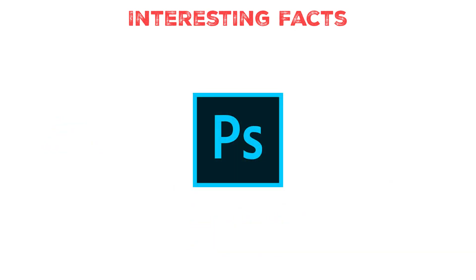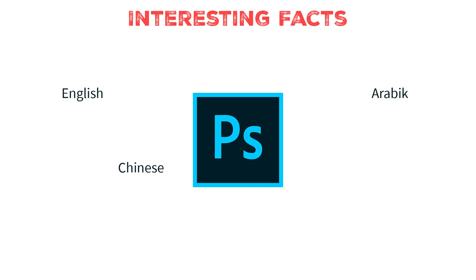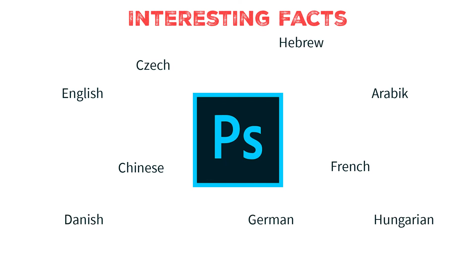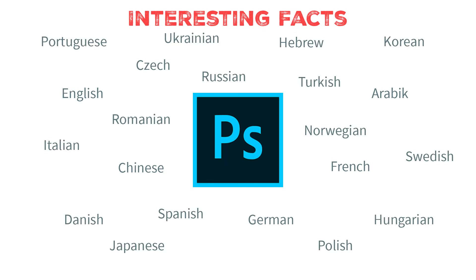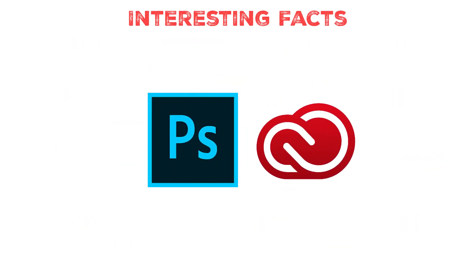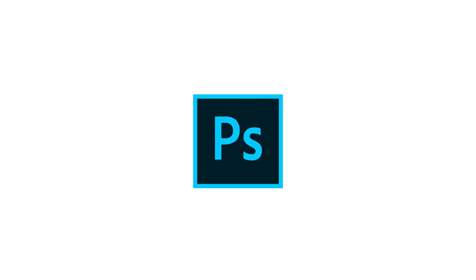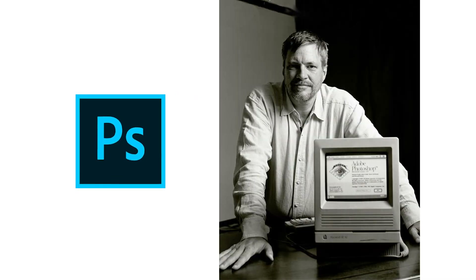Adobe Photoshop runs in 26 languages, including English, Arabic, Chinese, French, German, and many more. Photoshop's CC version includes various changes — with CC you are granted more liberty, speed, and the ability to make images incredibly real. Looking back into Photoshop, we will see how a simple idea can evolve into a useful and impacting tool. Without Knoll's Display program, we would not have our favorite software.